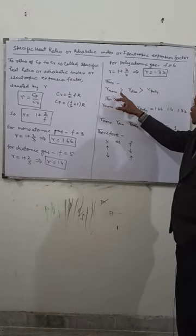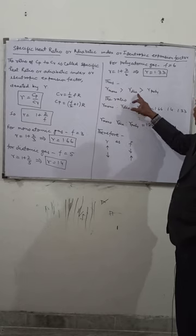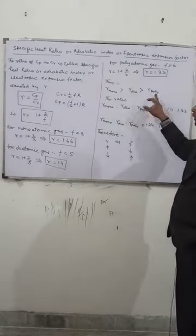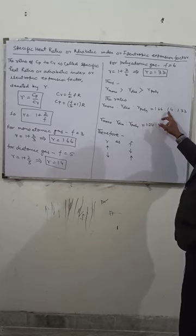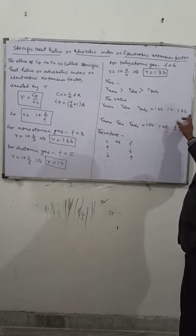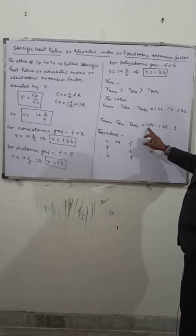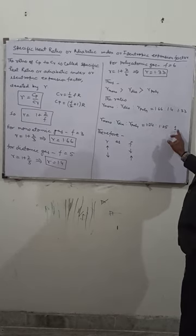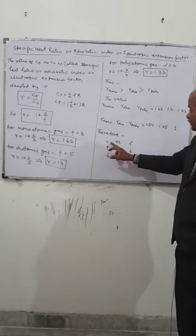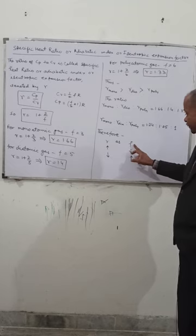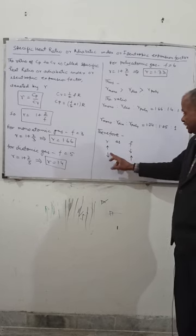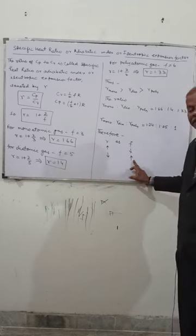So gamma monatomic is greater than gamma diatomic, which is greater than gamma polyatomic. The ratios 1.66, 1.4, and 1.33 equal 1.24 ratio 1.05 ratio 1. The value of gamma increases as the degree of freedom decreases and decreases as the value of F increases.